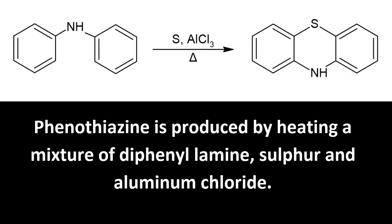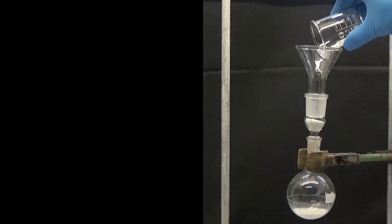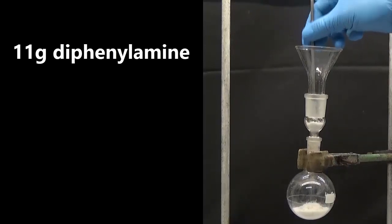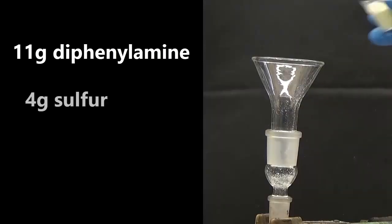Phenothiazine is produced by heating a mixture of diphenylamine, sulfur and aluminum chloride. To obtain phenothiazine, we mix in a 100 milliliter flask 11 grams diphenylamine, 4 grams sulfur,